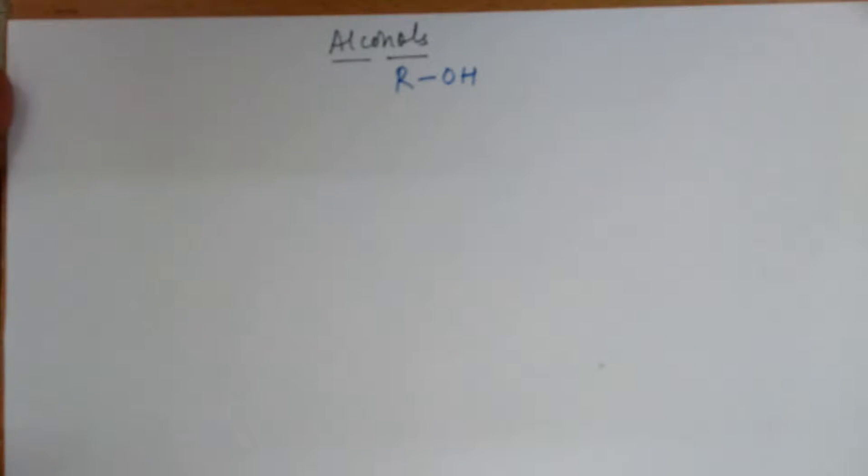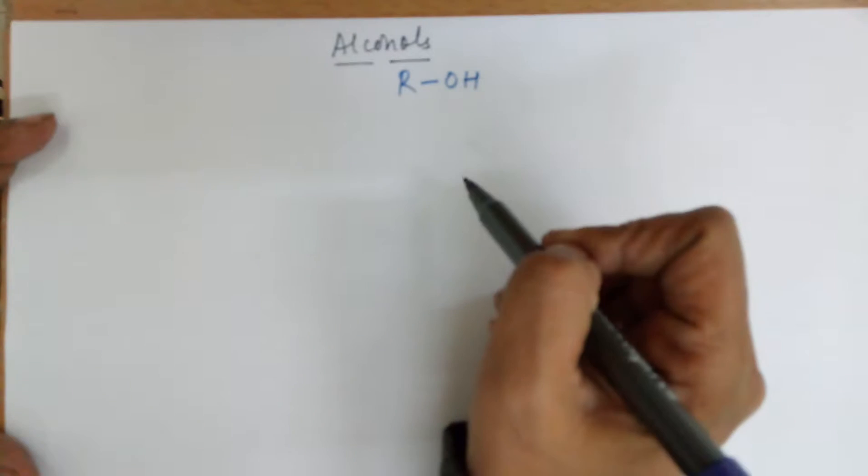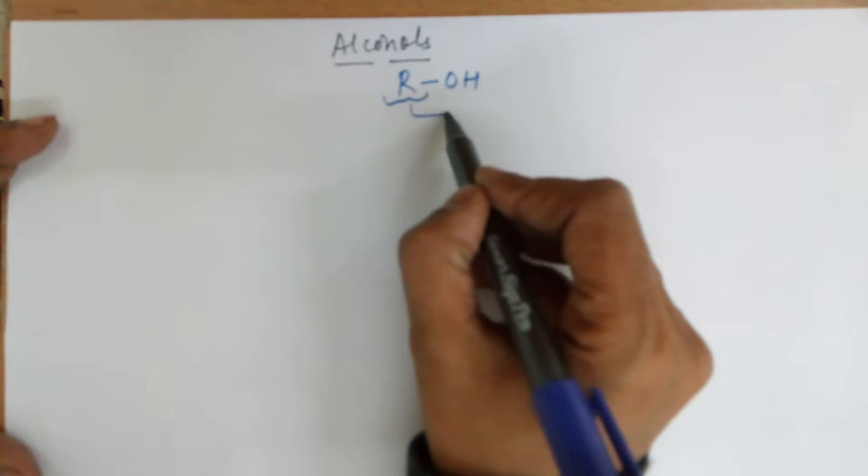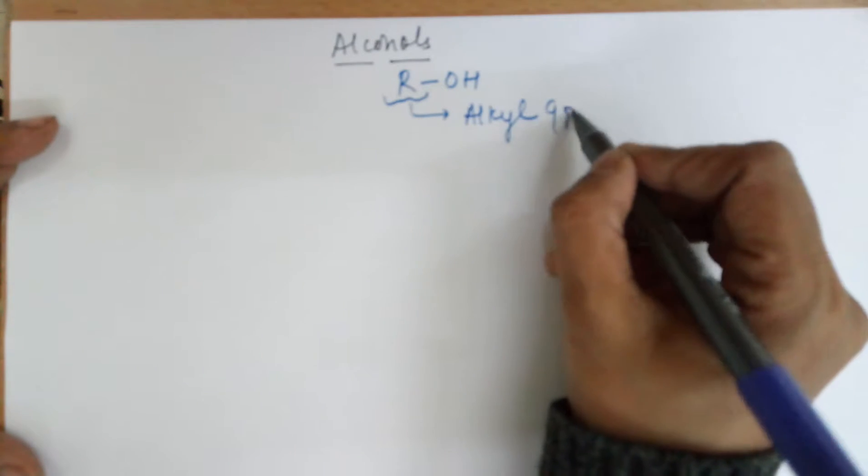Good evening students. In today's class we'll be doing alcohols and their nomenclature. An alcohol is written as ROH, where R refers to an alkyl group. What exactly is an alkyl group?